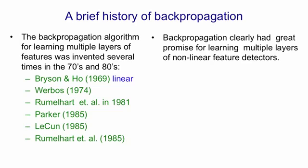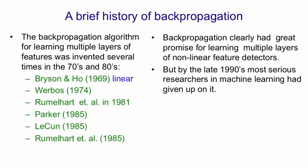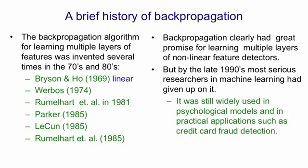It was clear that backpropagation had a lot of promise for learning multiple layers of non-linear feature detectors. But it didn't really live up to its promise, and by the late 1990s, most of the serious researchers in machine learning had given up on backpropagation. For example, in David MacKay's textbook there's very little mention of it. It was still widely used by psychologists for making psychological models, and also quite widely used in practical applications such as credit card fraud detection. But in machine learning, people thought it had been supplanted by support vector machines.